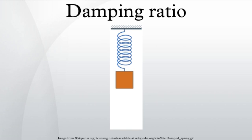Many systems exhibit oscillatory behavior when they are disturbed from their position of static equilibrium. A mass suspended from a spring might, if pulled and released, bounce up and down.